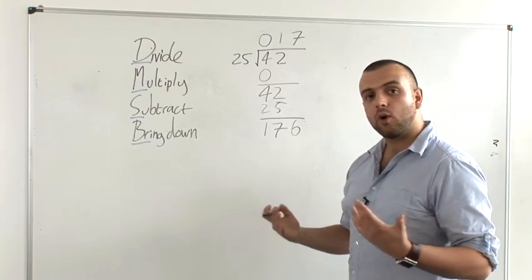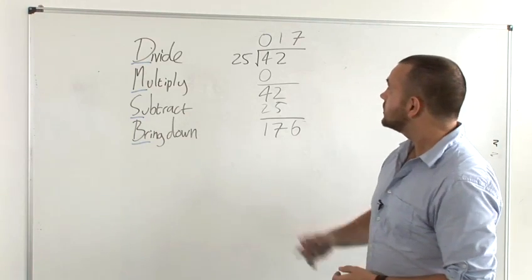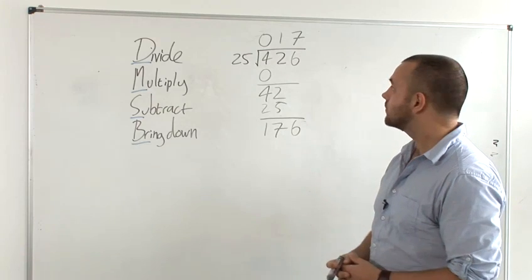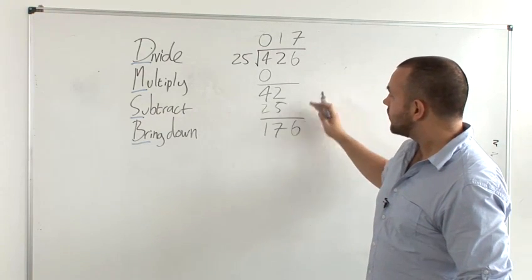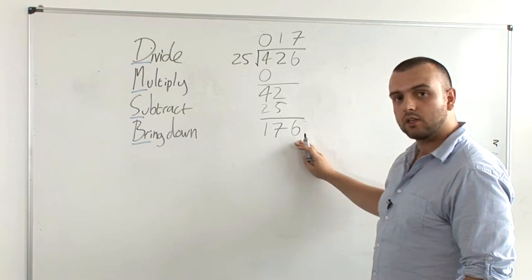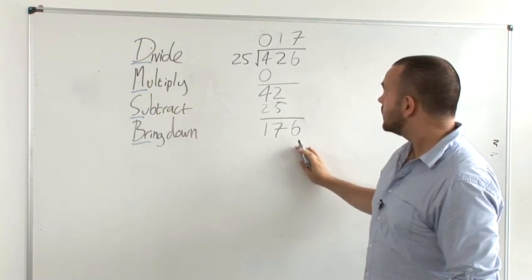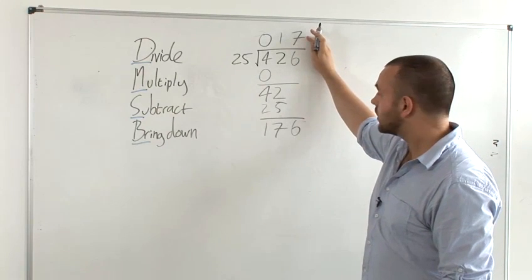Here's just a brief example to show what happens if you do have a remainder. Say you were dividing 426 by 25. Everything would have gone the same up to this point where you've got 176 here. Then following the steps, divide 176 by 25. The answer is still 7, so that goes up there.